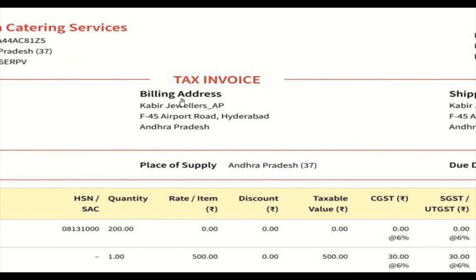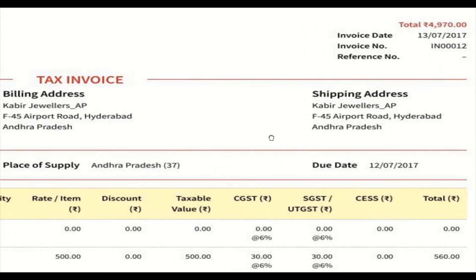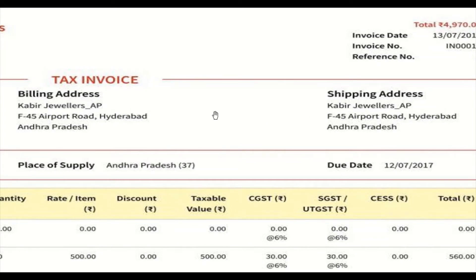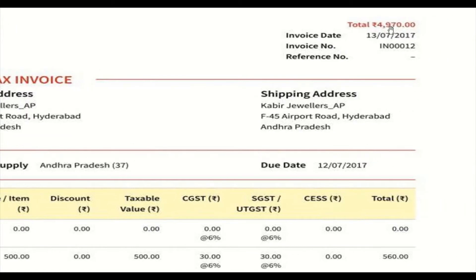The billing address and shipping address are the same here — Kabir Jewelers — meaning the same person is paying and receiving. If billing and shipping address are different, that would be a bill-to-ship-to transaction. The invoice date and invoice number are essential; the invoice number must be unique. The reference number is used when a debit note or credit note is issued against an invoice, or when there are two invoices where the second references the first.